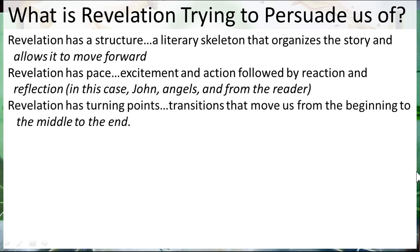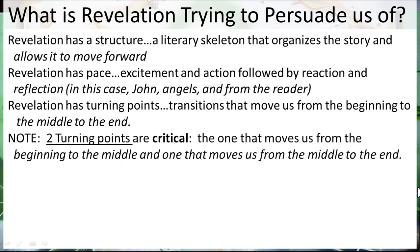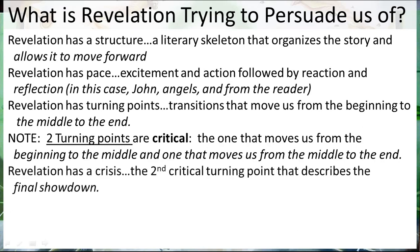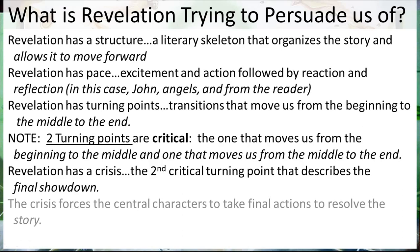Revelation has turning points — transitions that move us from the beginning to the middle to the end. There are two critical turning points. The one that moves us from the beginning to the middle, which we're going to see tonight, and one that moves us from the middle to the end, which is for a future study. Revelation also has a crisis — the second critical turning point — which describes the final showdown. The crisis in any story forces the central characters to take final actions to resolve the story, and Revelation is no different.